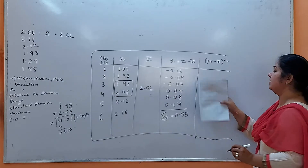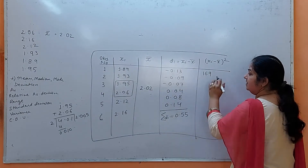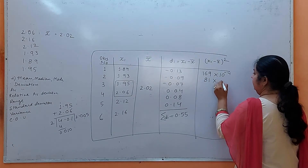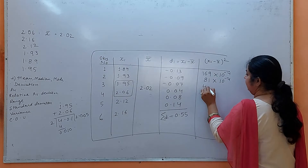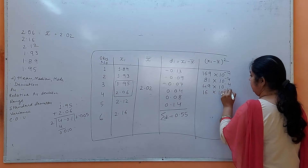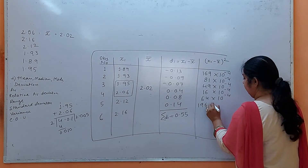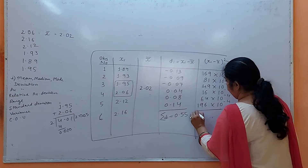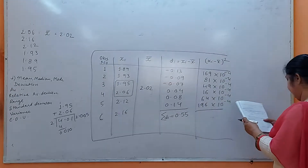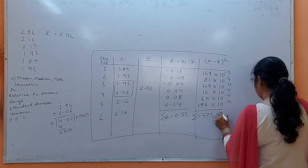Now we square each deviation. Square of 0.13 is 169×10⁻⁴, square of 0.09 is 81×10⁻⁴, square of 0.07 is 49×10⁻⁴, square of 0.04 is 16×10⁻⁴, square of 0.08 is 64×10⁻⁴, and square of 0.14 is 196×10⁻⁴. We know squares up to 20, so we can do this directly. The sum of squares comes out to be 575×10⁻⁴.